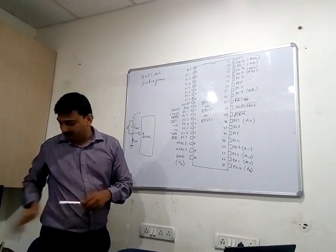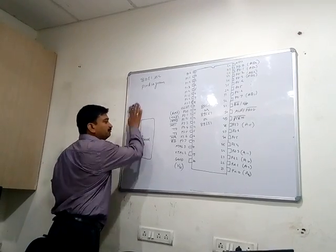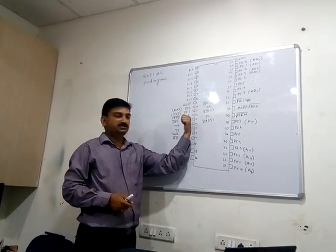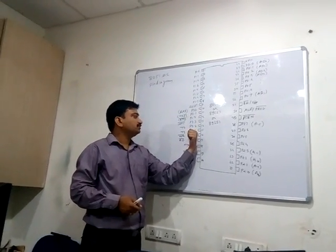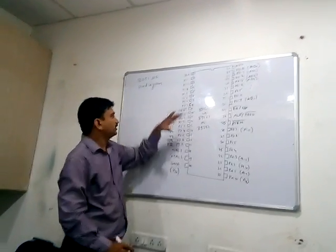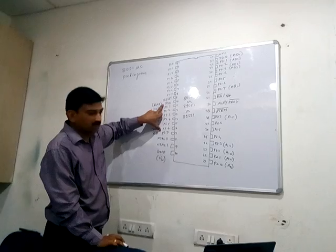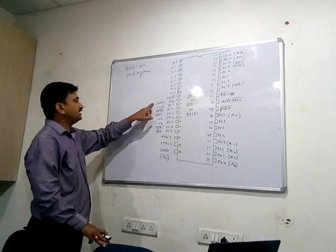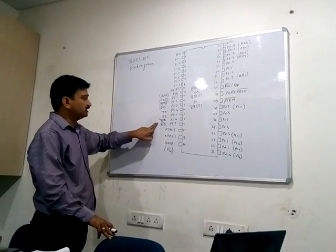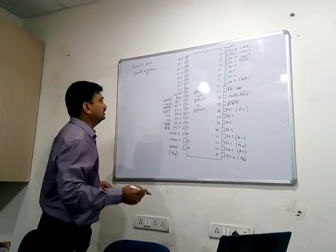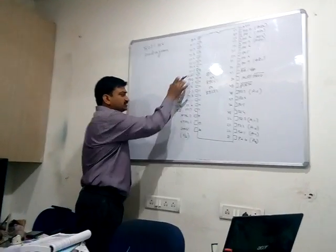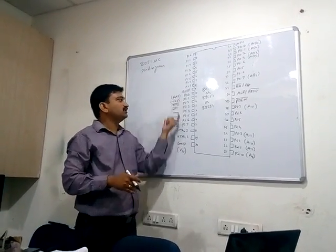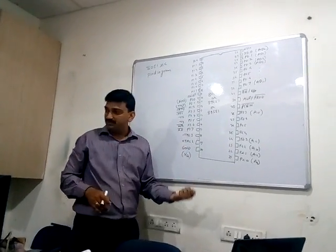After the reset pin, Port 3 starts. P3.0 through P3.7 are the eight pins of Port 3. Port 3 has a dual function: P3.0 is RXD, TXD, INT0 bar, INT1 bar, T0, T1, WR bar, and RD bar. We will see only the port functions now and cover the dual role in the next lecture, as it is more complex.